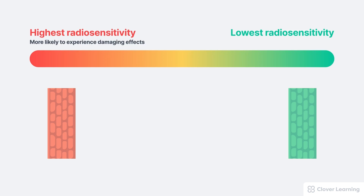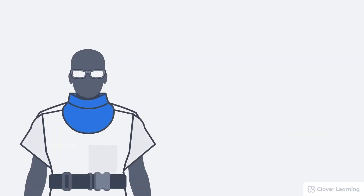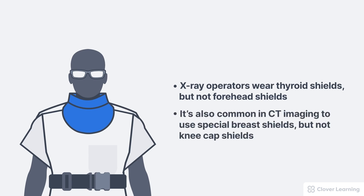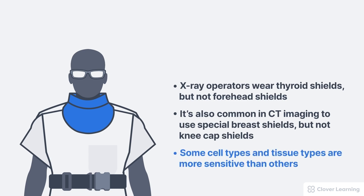If a tissue has a low radiosensitivity, that means it is less likely to experience the damaging effects of radiation. For these less sensitive tissues, it takes a lot more radiation dose for them to be harmed. Understanding the radiosensitivity of tissue types is important because some tissues require more precautions than others. This is why x-ray operators wear thyroid shields but not forehead shields, and why it's common in CT imaging to use special breast shields but not kneecap shields.